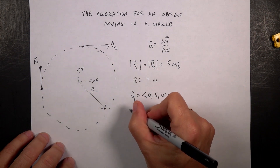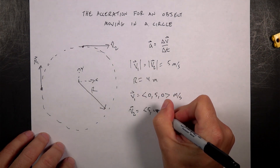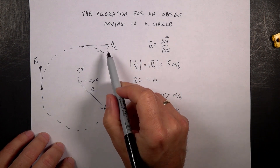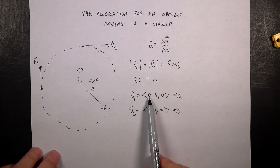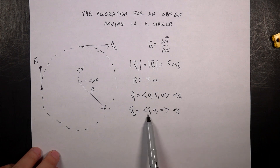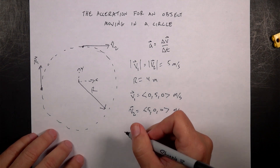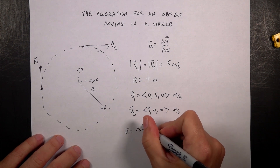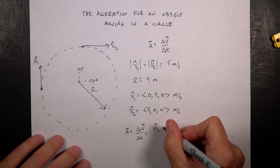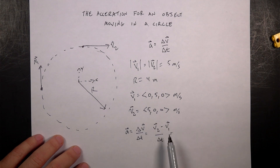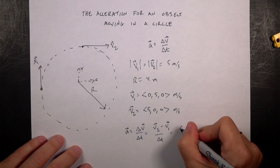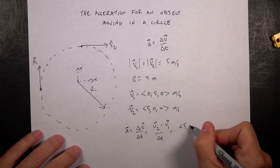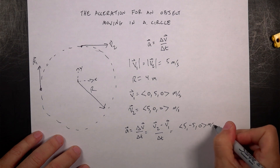Now I can write v2 as a vector. v2 is going to be (5, 0, 0) meters per second, because that one is moving in the x direction. The magnitude of v1 is the square root of 0² + 5² + 0² = 5, and the magnitude of v2 is the square root of 5² + 0² + 0² = 5. So these both have the same magnitude but different directions. The acceleration is the change in velocity divided by the change in time: v2 minus v1 over Δt. Taking v2 minus v1 component by component: 5−0 = 5, 0−5 = −5, and 0−0 = 0 meters per second. Then I divide by Δt.